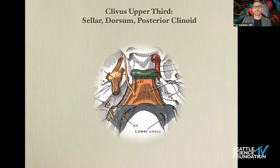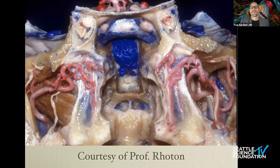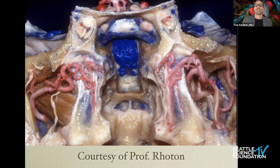When we remove the clivus, we see this venous plexus. It's important to understand its relationship — many tumors invade between the periosteal and meningeal layers. If the tumor hasn't invaded, you'll have to deal with this plexus, which can be as ferocious as the cavernous sinus. Both chordomas and meningiomas can invade this interdural space.